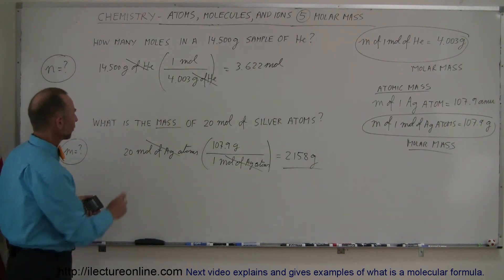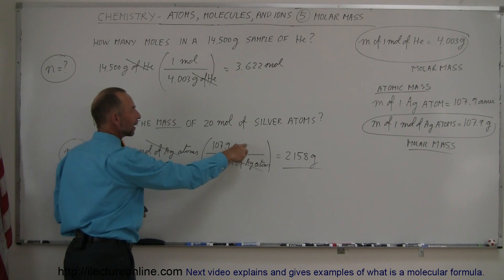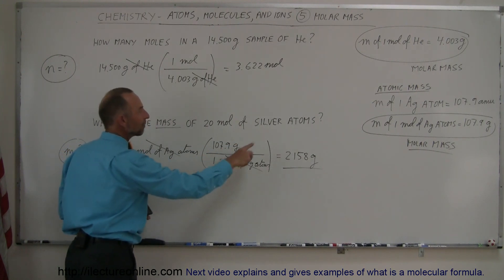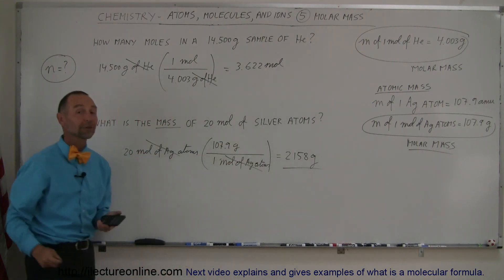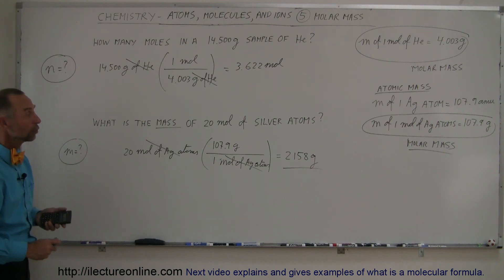So if I have 20 moles of silver atoms, and the conversion is 107.9 grams per mole of silver atoms, I have that many grams of silver. And that's how you think about the molar mass.